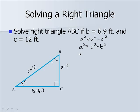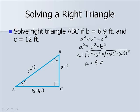That gives us that a would be the square root of c squared minus b squared. It's the square root of 12 squared minus 6.9 squared. We get a value for a of approximately 9.8 feet.